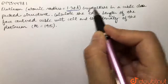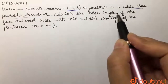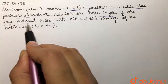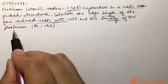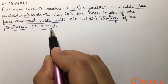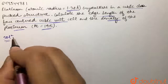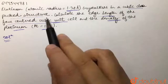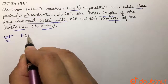Our question is: platinum has an atomic radius of 1.38 angstrom and crystallizes in a cubic close packed structure. Calculate the edge length of the face-centered cubic unit cell and the density of platinum. The atomic weight of platinum is given as 195. Platinum is crystallizing in a cubic close packed arrangement, which is an FCC arrangement.